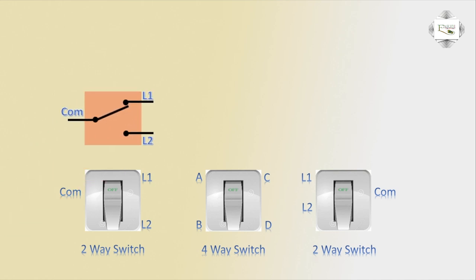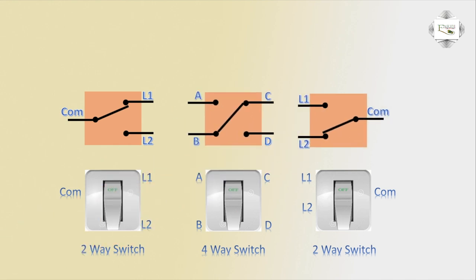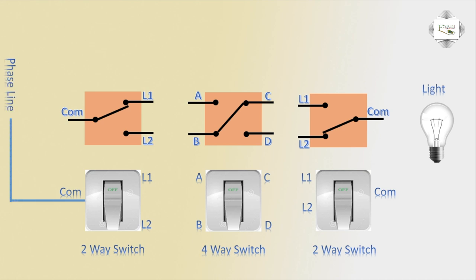Now I show the 2-way switch circuit diagram and the 4-way switch circuit diagram. The phase line input goes to the first common input. Line 1 connects to terminal a, with a short line, and line 2 connects to terminal b, with a short line to terminal c.